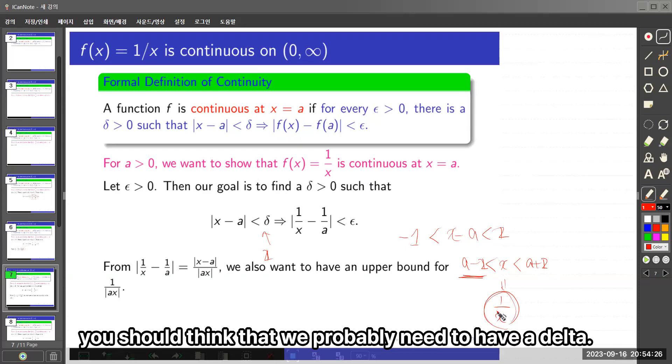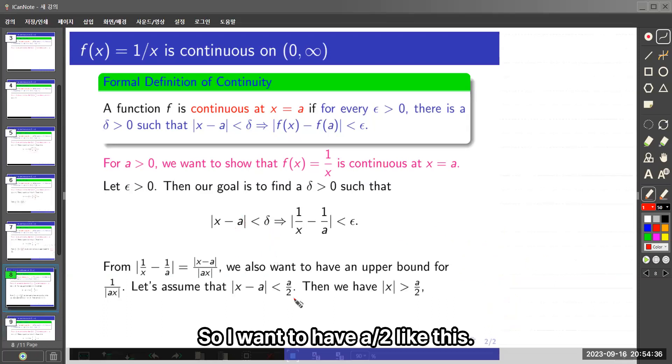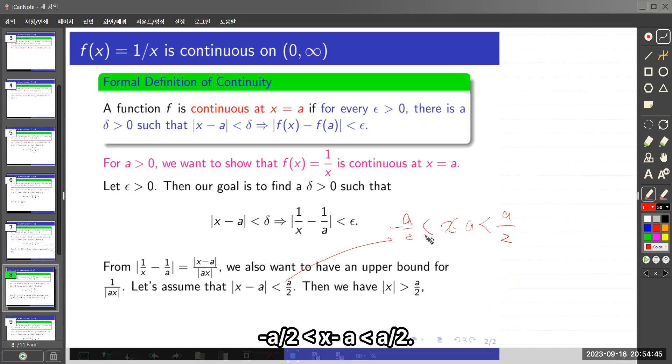So probably you should think that we probably need to have a delta maybe related to a. So I want to have a/2 like this. Then from here,